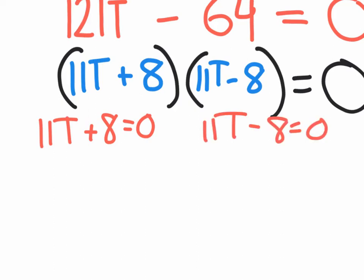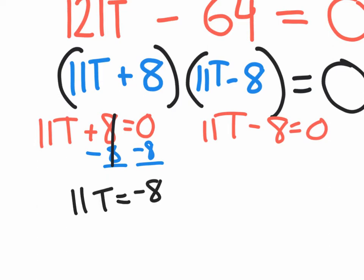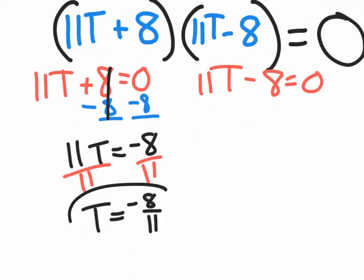Solving by subtracting 8 on both sides gives 11T equals negative 8. Dividing by 11 on both sides gives the final answer T equals negative 8 elevenths. On the other factor — same binomial, just with a different sign — we end up with the same answer but with a different sign: T equals positive 8 elevenths.